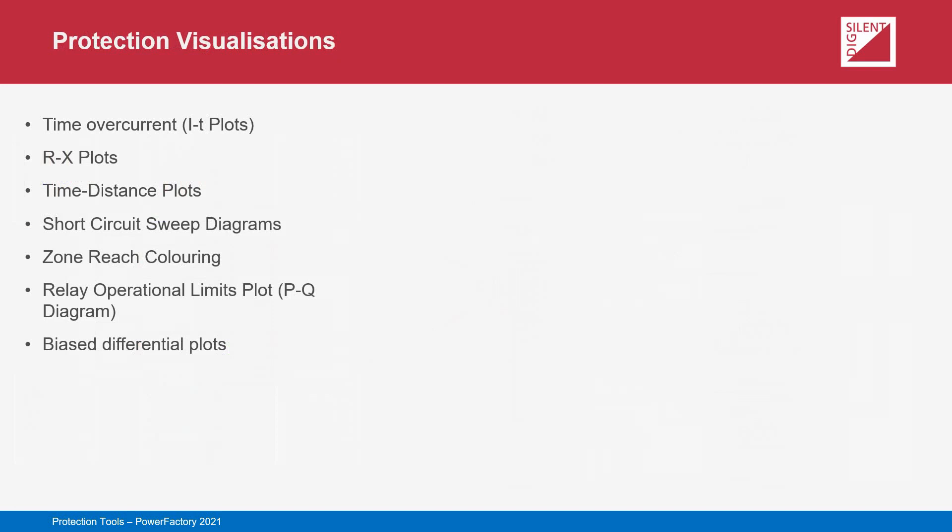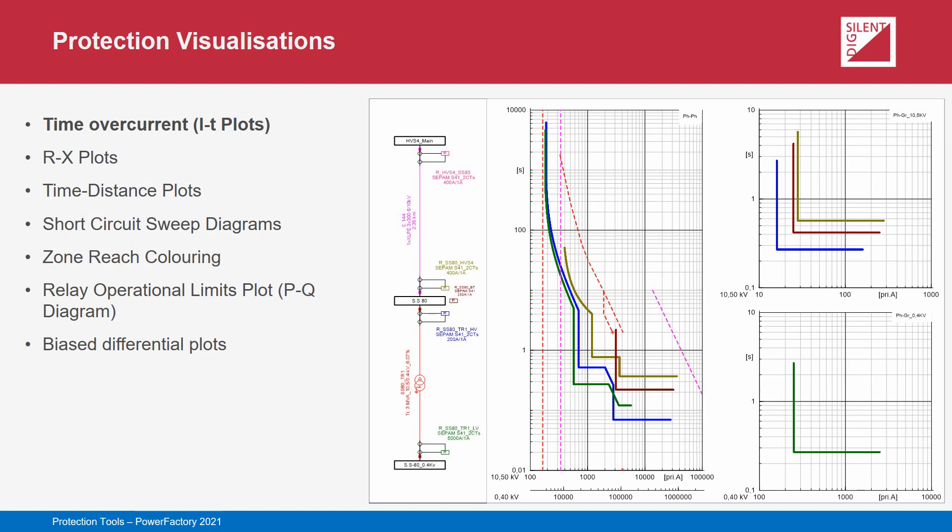Various plots are available within the software for visualization of settings and results. Some are highly specific to protection functionality and are well known to protection engineers. All plots are interactive, and relay settings can easily be modified through those interactions. Time overcurrent plots are used with overcurrent protection, representing the tripping characteristics of coordinated relays on a logarithmic current-time axis. These plots can also display cable damage curves, transformer damage curves, inrush characteristics, motor starting characteristics, and current constants illustrating fault or loading condition magnitudes.